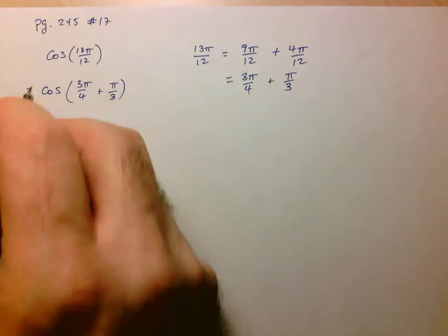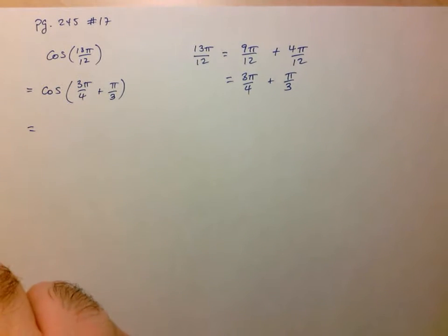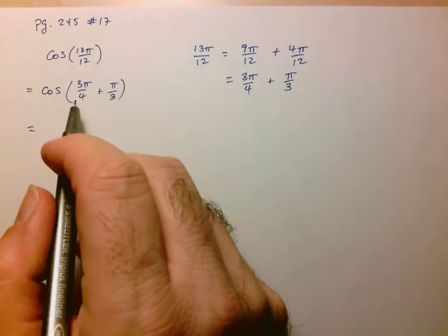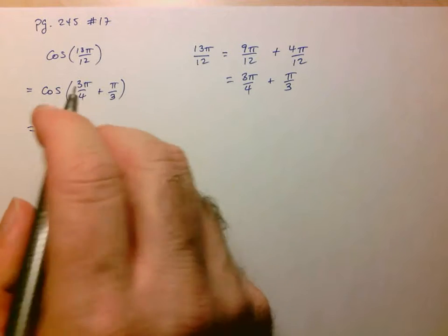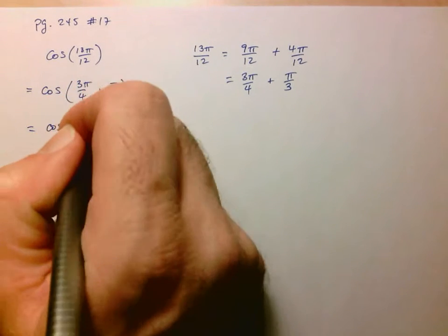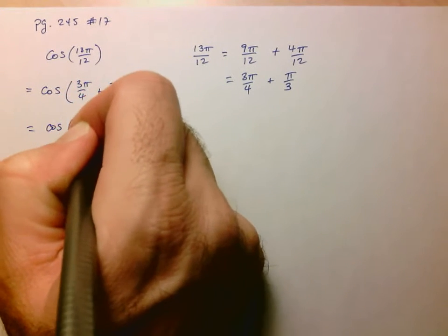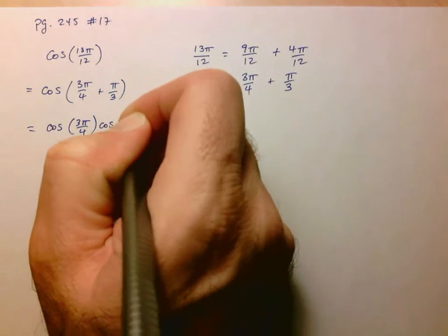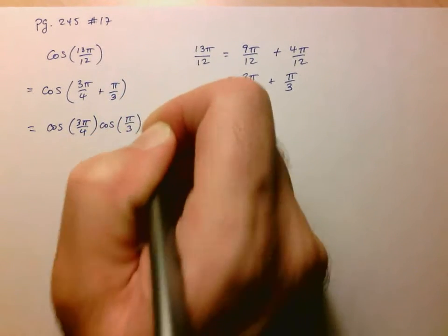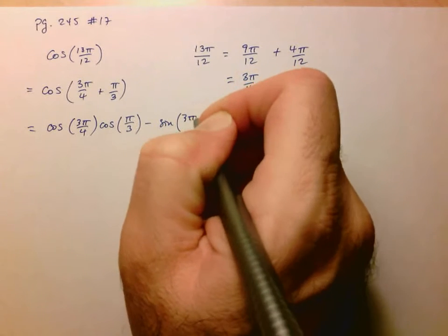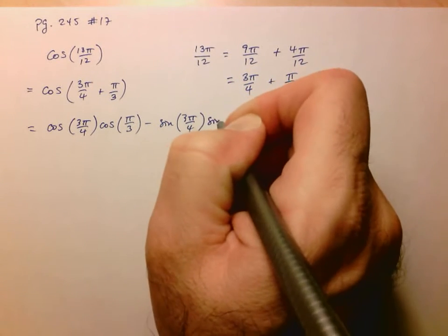And now I can use my cosine addition formula to split this up into expressions with the individual angles. So this is equal to cos of the first times cos of the second, minus sine of the first times sine of the second.